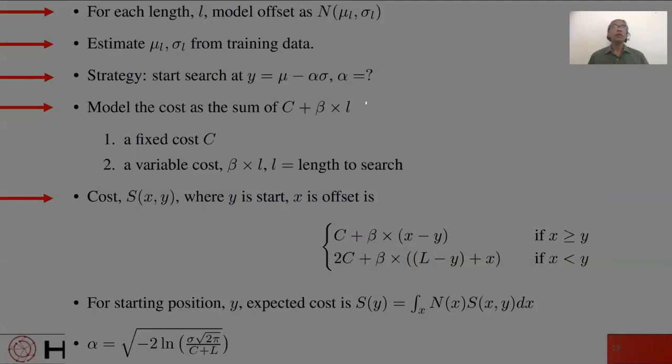Now let s of x comma y be the cost when x is the true offset and y is where we start the search. The formula for s depends on whether we undershoot or overshoot. If we undershoot, it is c plus beta times x minus y. If we overshoot, we pay twice. The first cost is c plus beta times l minus y. That takes us to the end of the string. Then we start again from the beginning and pay c plus beta times x.